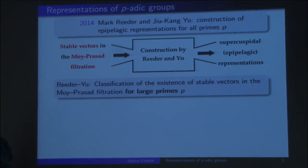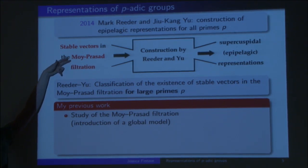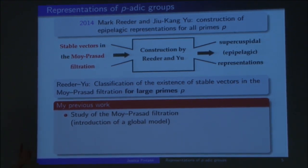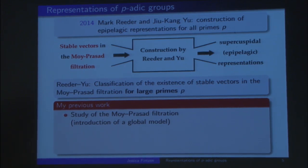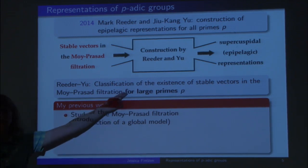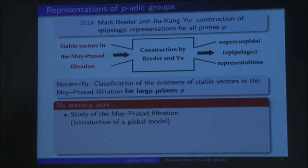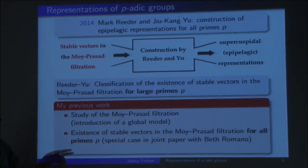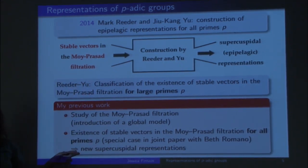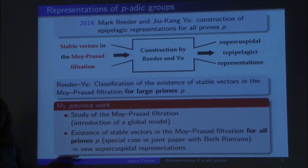Some of my past work was in this area. What I did is study this Moy-Prasad filtration and give something like a global model for it. The Moy-Prasad filtration is a filtration of the p-adic group associated to a fixed prime P. I constructed something that allows us to compare this filtration for different primes, and this allows us to move between filtrations for different primes and deduce results for small primes that were previously only known for large primes. One application is that we now obtain stable vectors for small primes as well — part of it in a joint paper with Beth Romano — and as an application, we get new supercuspidal representations for small primes P that did not exist before.